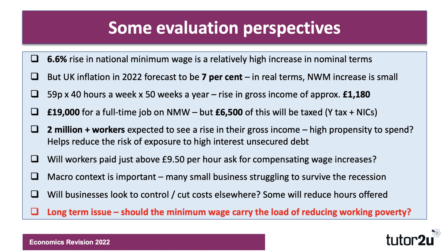That said, a quick calculation: if you work 40 hours a week for 50 weeks a year, an extra 59p an hour is about a £1,100 increase in gross income. But if you're earning £19,000 a year working full-time on minimum wage, about a third will be taxed — income tax at 20% and National Insurance at 13.5% — so you'll lose about a third in direct taxes. The full gains of the minimum wage might be tempered and constrained by the tax system. Will workers paid just above minimum wage ask for compensating wage increases? If you were paid £10 an hour beforehand, your wage differential with people now on £9.50 has narrowed.